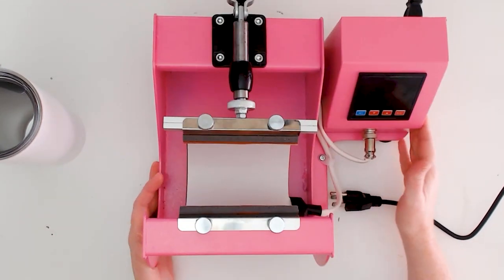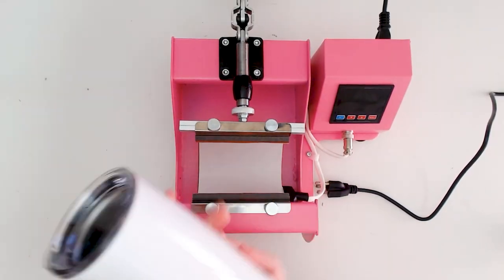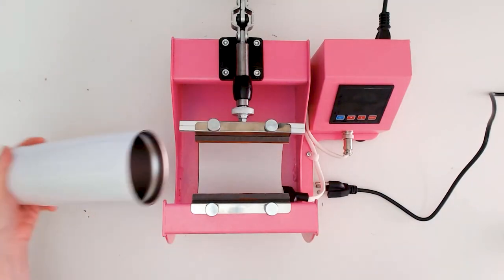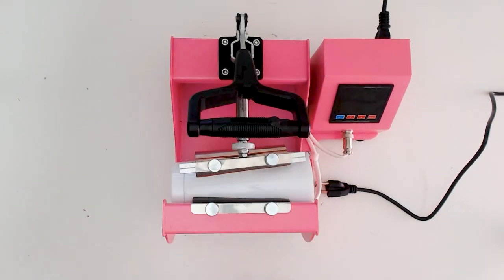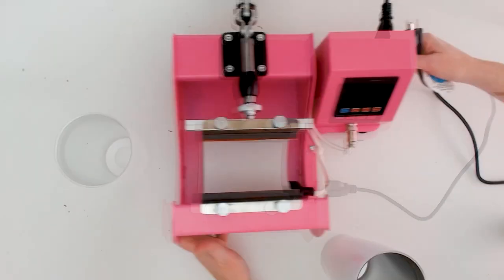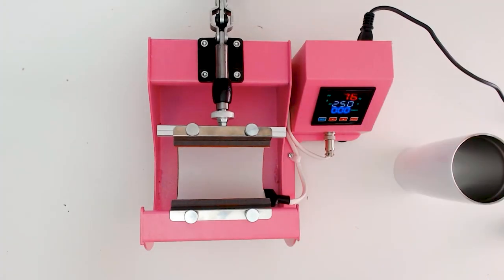Always use your mug press on a flat, sturdy surface. Then check the mug press pressure by placing the mug or tumbler in the mug press, pushing down on the handle. Use the pressure knob to adjust to the correct pressure for your project.